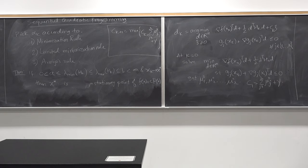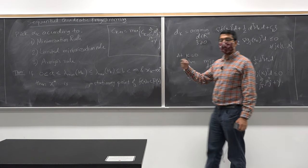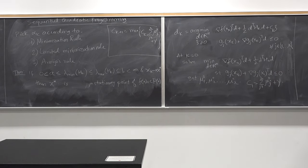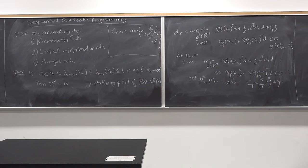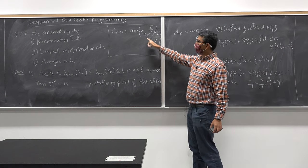If you pick a value of C that is too small — less than the sum of the Lagrange multipliers — your convergence will become very slow. Instead of moving toward the optimal point, you will wander around, which slows convergence significantly. You don't want that to happen. You need to continue updating C_k; as long as it is sufficiently high, you are in good shape.